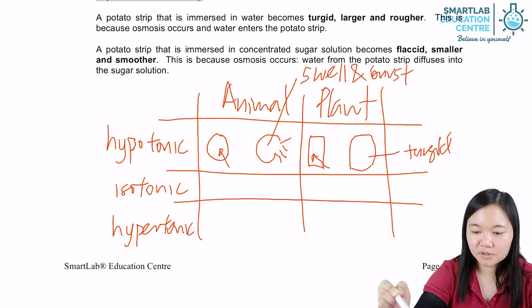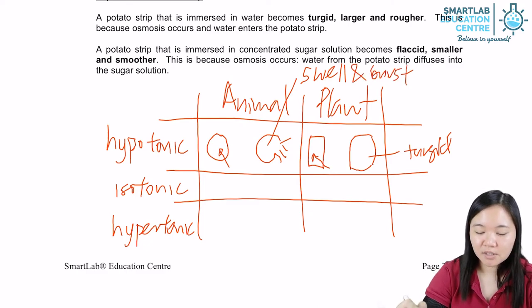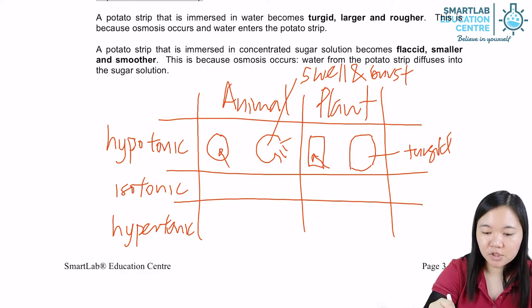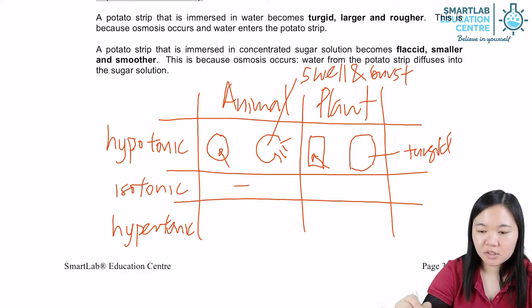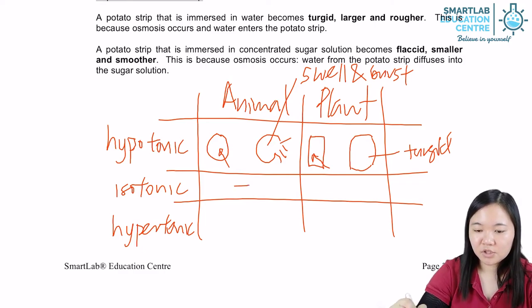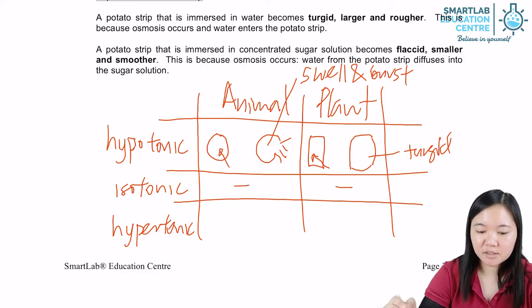Plant cells, on the other hand — this is how a normal plant cell looks. When water enters, it will become turgid. The cytoplasm will press onto the cell wall and it becomes turgid. For isotonic solution, there is no change — no change in animal cells, no change in plant cells.